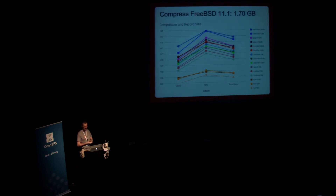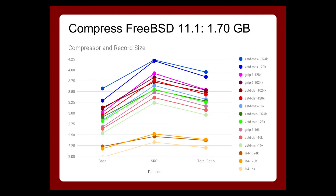I did a more real-world benchmark of an install of FreeBSD, including all of the source code, placed onto datasets with various compression and block sizes. The three at the bottom are LZ4, where you get a little better than 2 to 1 compression — the first dot is the base system with binaries, the middle is source code, and the other is the total. The blue ones at the top are the maximum compression with ZStandard, where you can get over 4 to 1 compression on the base system. Combine that with compressed ARC and you're getting a much better cache hit ratio.